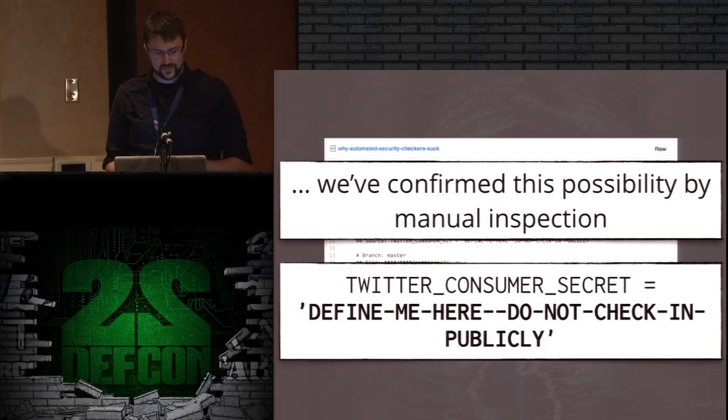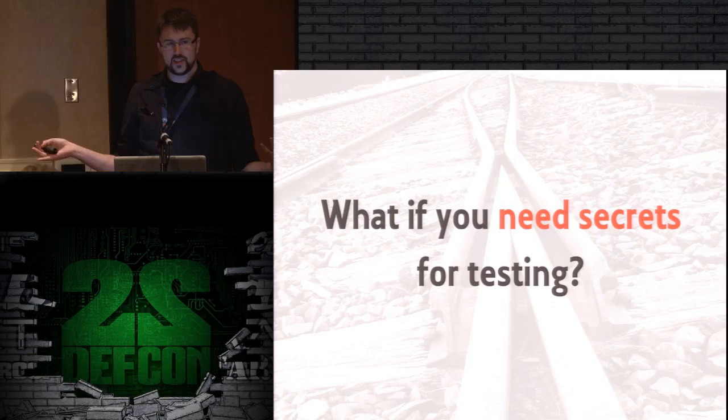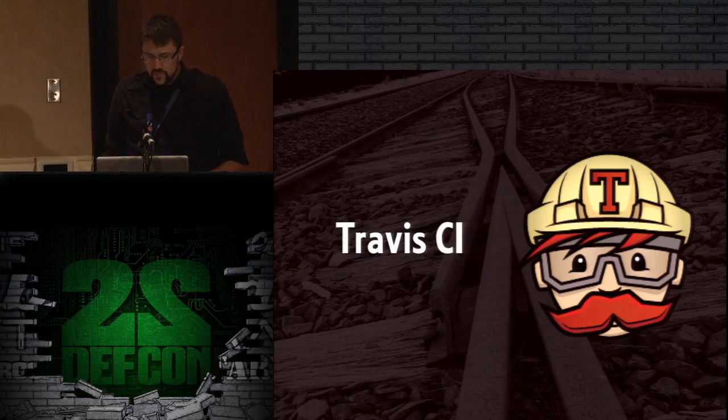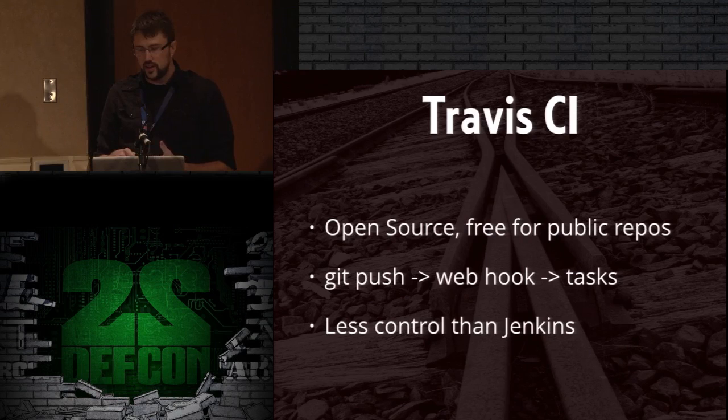So that's it for secrets. But what if you actually need secrets for testing? It's not like you can live in a vacuum where your code never touches anything. One option is Travis CI. Travis CI is great for open source — it's free for public repos, you pay for private. You just do a git push, it hits a webhook and sends out tasks to run your build. It has a lot less control than Jenkins, but it's super simple.